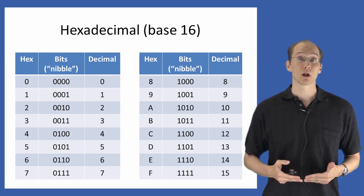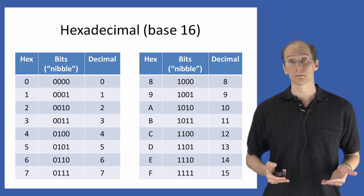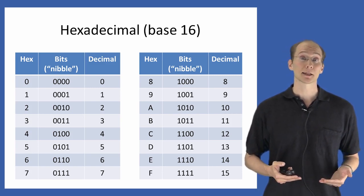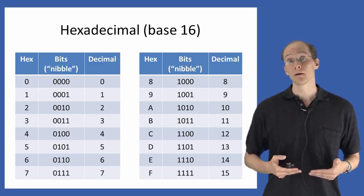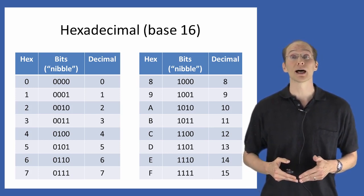So the hex digits 0 through 9 correspond to the values 0 through 9, and then the hex digit A corresponds to 10, the hex digit B corresponds to 11, and so on up through the hex digit F, which corresponds to the value 15.